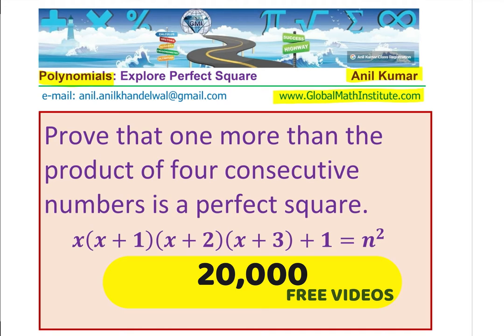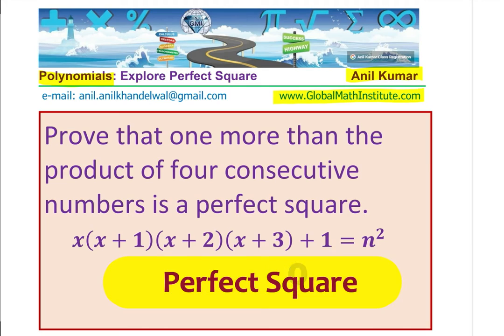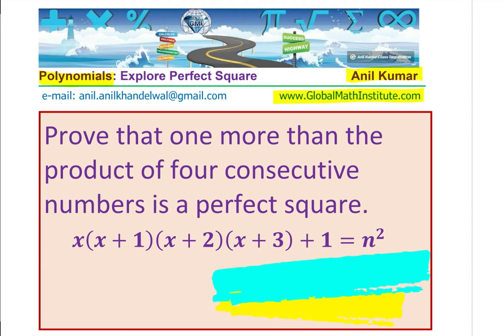The question here is, prove that one more than the product of four consecutive numbers is a perfect square. Mathematically, you could write it as x times x plus 1 times x plus 2 times x plus 3 plus 1 equals to n square, where n is a natural number. The four consecutive numbers are x, x plus 1, x plus 2, x plus 3. Their product plus 1 is a perfect square. That is what you need to prove.